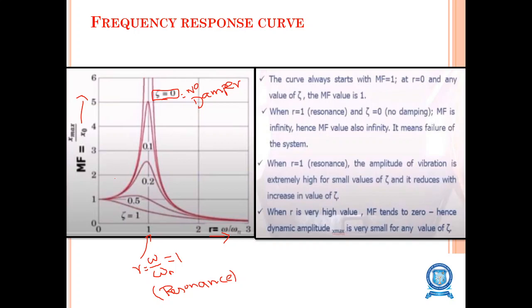The frequency response curve always starts with magnification factor 1 at r equal to 0 for any value of η. When r equals 1 (resonance) and η equals 0 (no damping), MF is infinity, meaning failure of the system. When r equals 1, the amplitude is extremely high for small values of η and reduces with increasing η. When r is very high, MF tends to zero, so the dynamic amplitude is very small for any value of η.